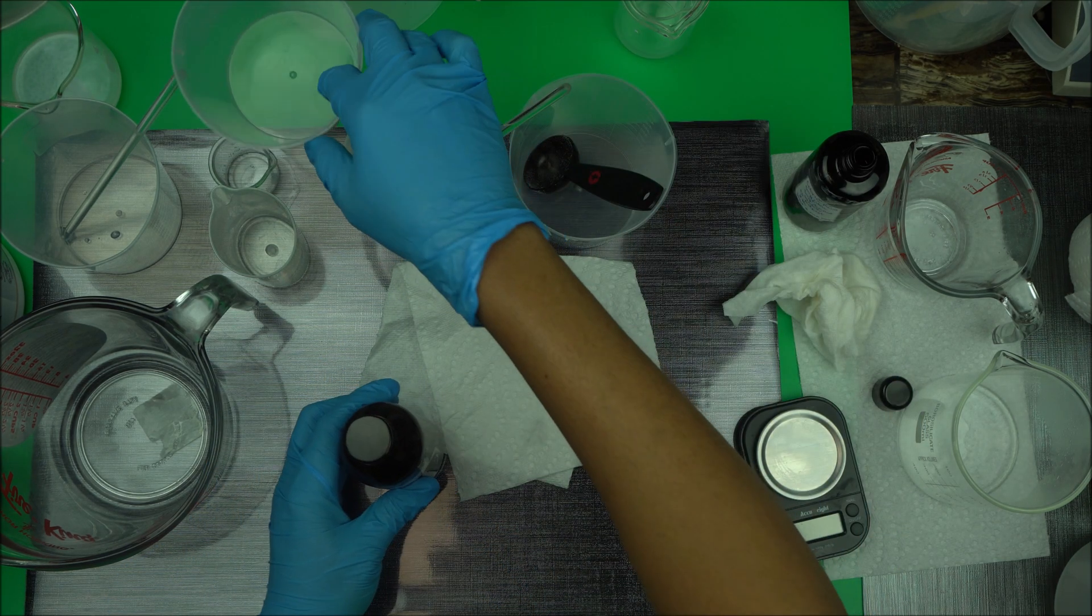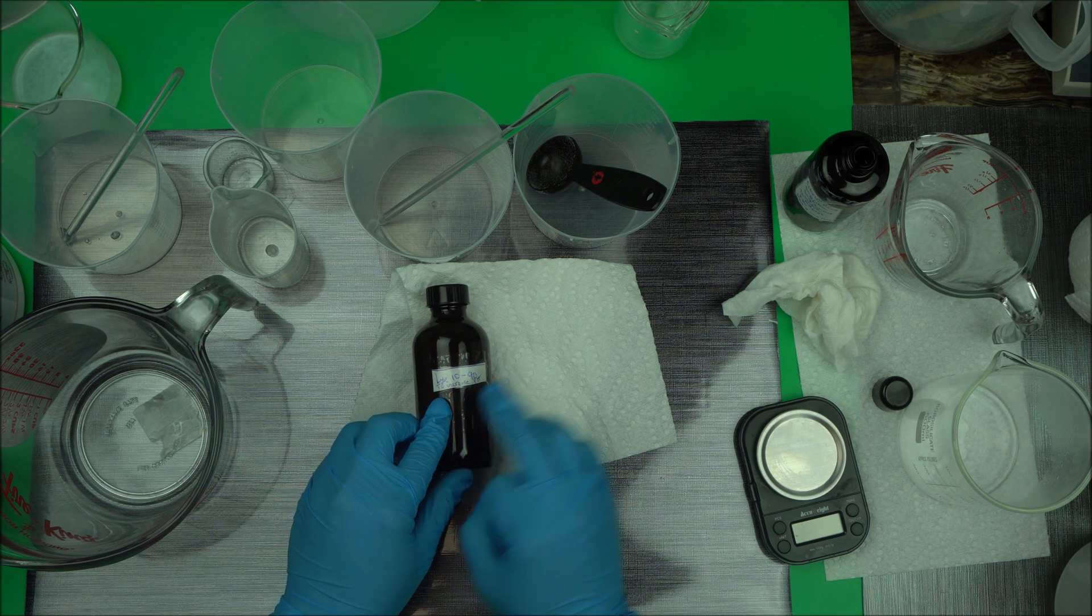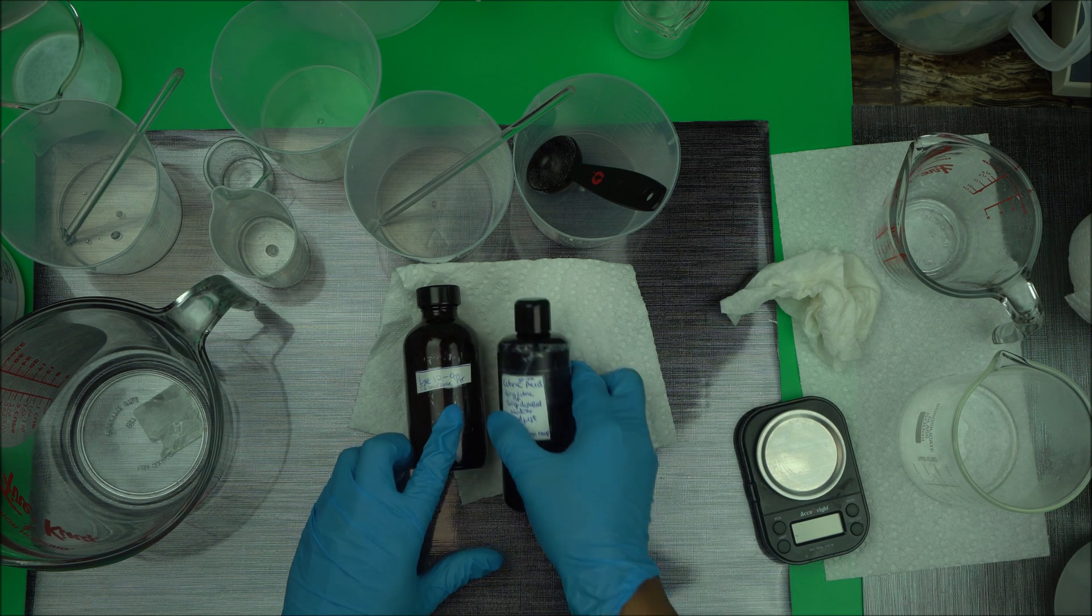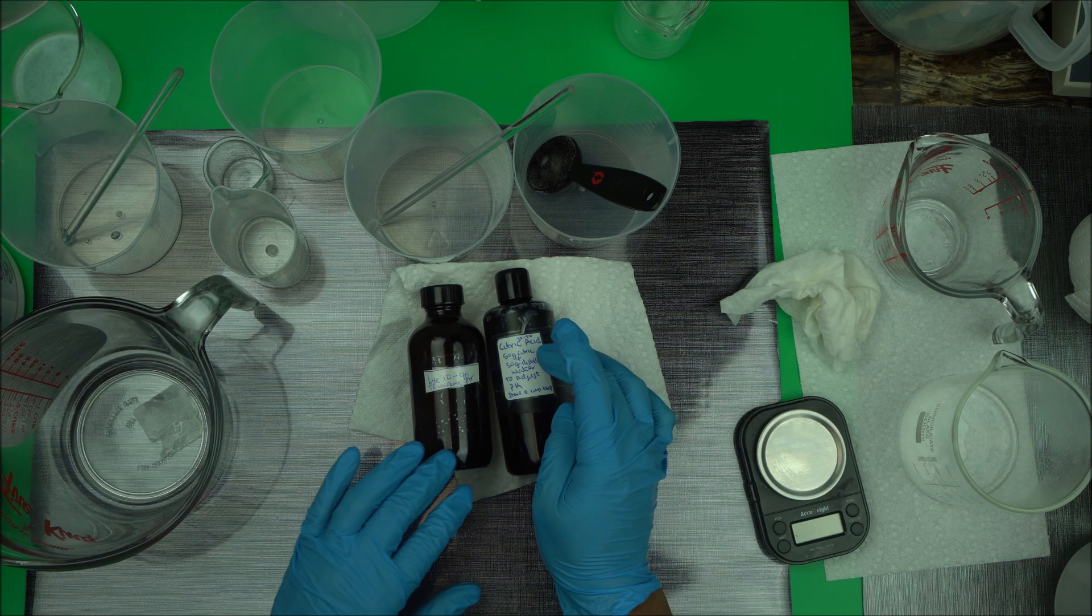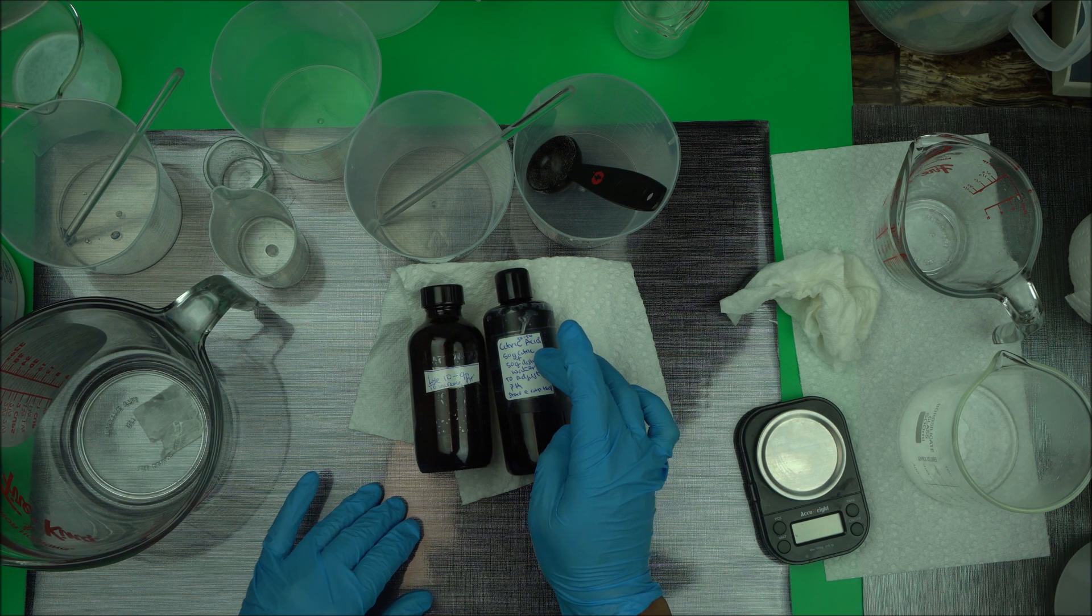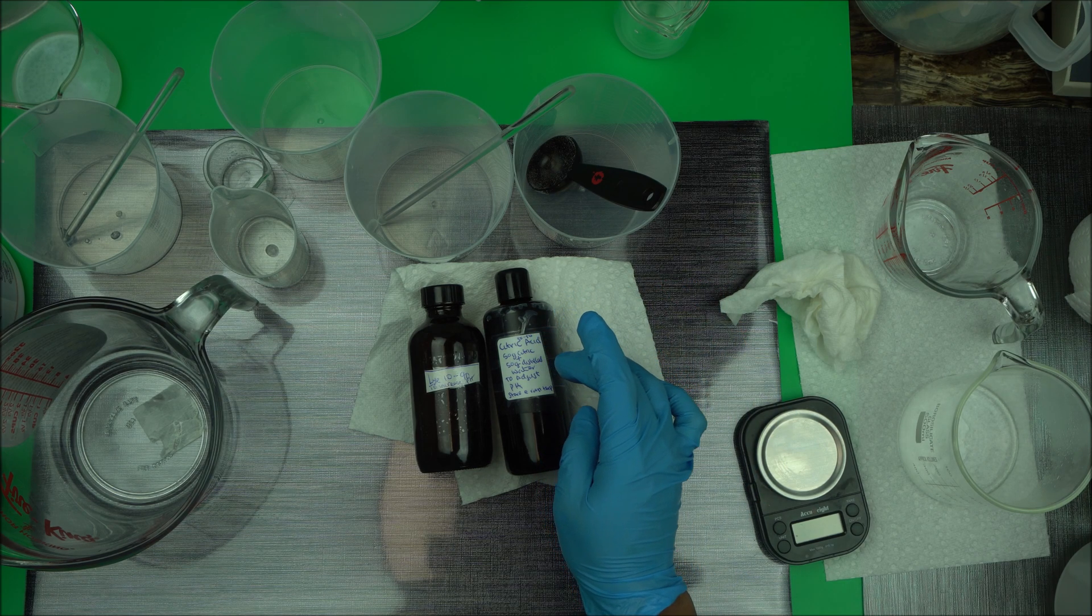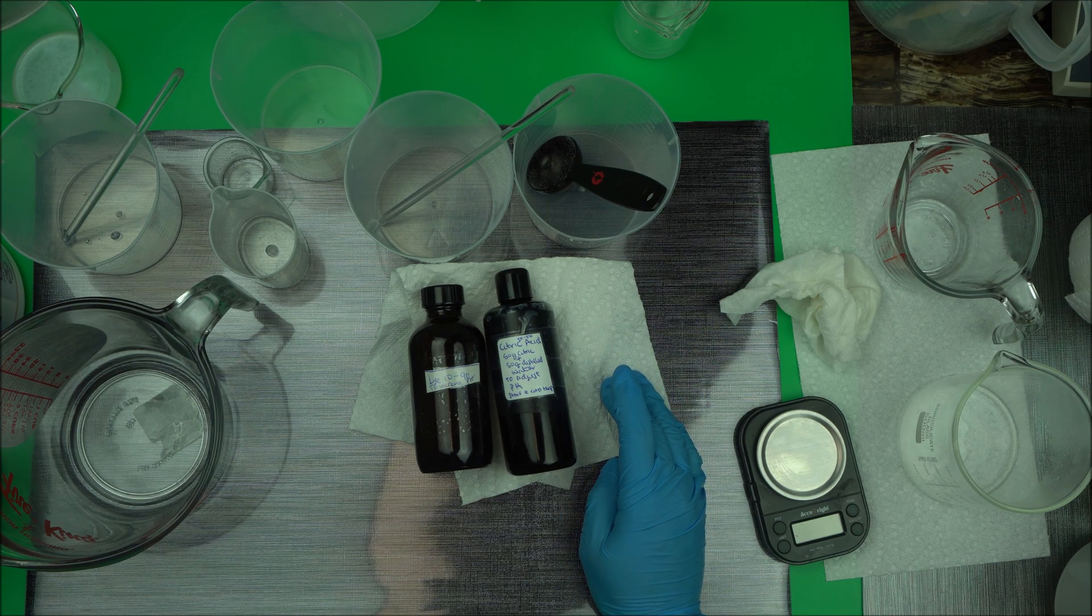Now that we are done with this, I'm just going to show them to you. 10% lye and 90% water—this is to increase the pH of your skincare product. 50% citric acid and 50% water—this is to reduce the pH of your skincare product.